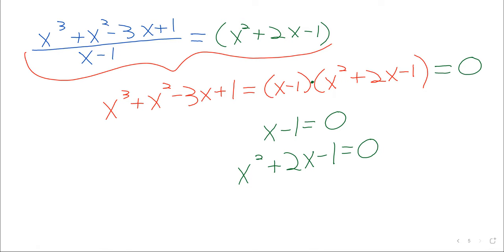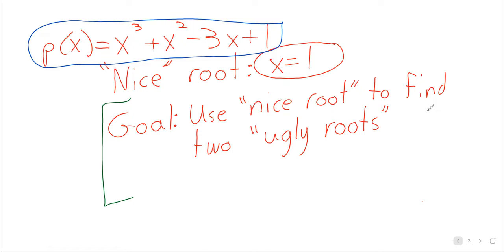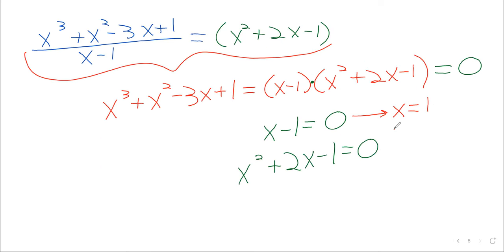Well, if x minus one equals zero, that just tells us x equals one, and that's nothing. We already knew x was equal to one. We already found that nice root. But what if x squared plus two x minus one equals zero? Well, the solutions to this are also roots, and we can solve this using the quadratic formula.